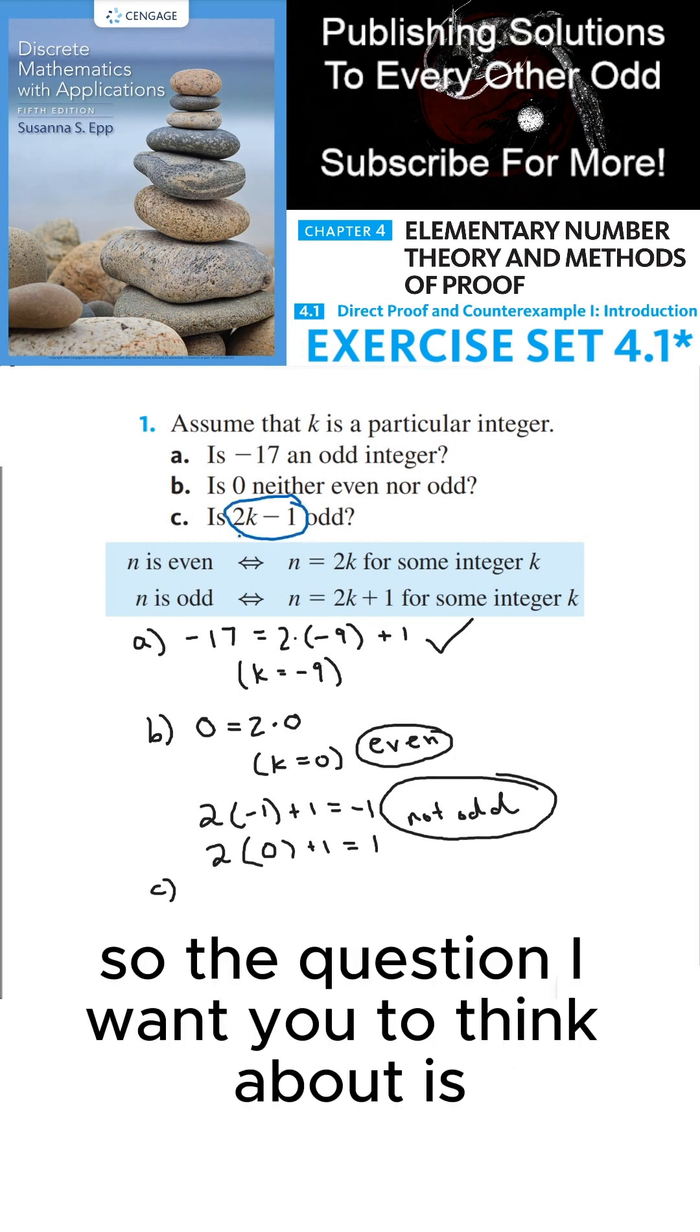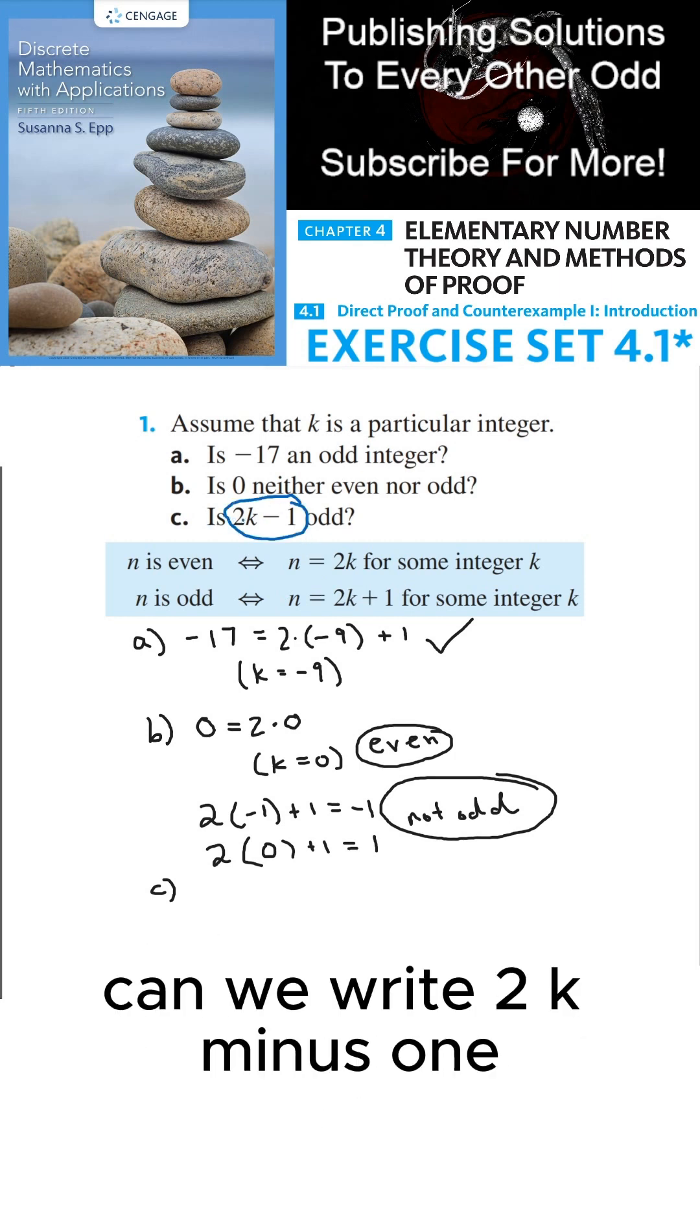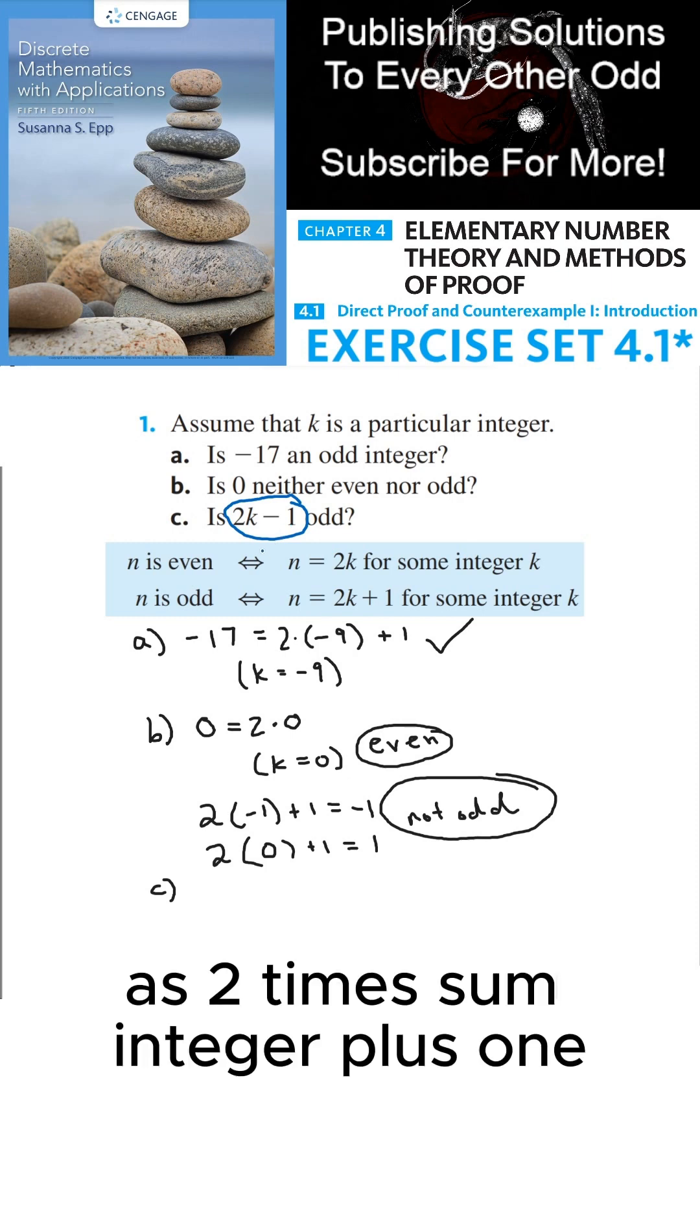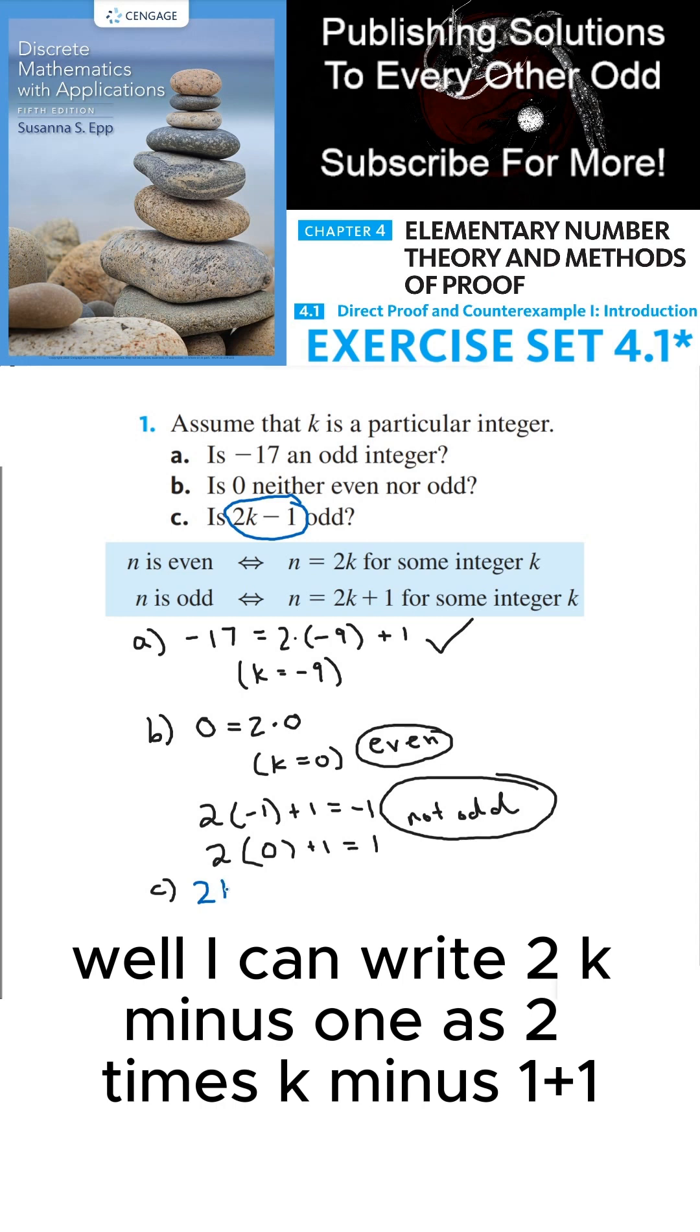So the question I want you to think about is can we write 2k minus 1 as 2 times some integer plus 1? Well, I can write 2k minus 1 as 2 times k minus 1 plus 1.